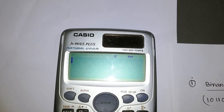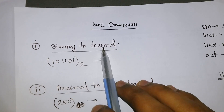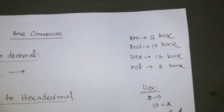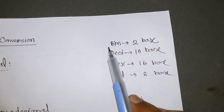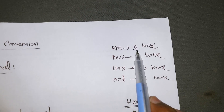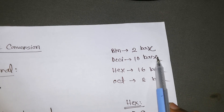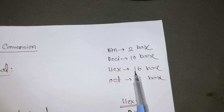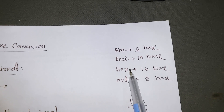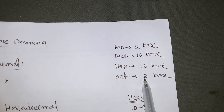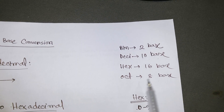Before you convert binary to decimal or decimal to hexadecimal, you need to know the basics. In binary we have a base-2 number system. In decimal we have a base-10 number system, which contains 0 to 9. In hexadecimal we have a base-16 number system, meaning we can write up to 0 to 15. In octal we have base-8, which goes from 0 up to 7.